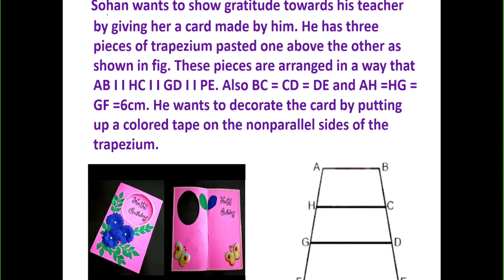The question is: Sohan wants to show gratitude towards his teacher by giving her a card made by him. He has three pieces in the shape of a trapezium, and these three trapeziums have been pasted one above the other as shown in the picture. The first trapezium is ABCH, pasted just above trapezium HCDG, which is just above trapezium GDEF.